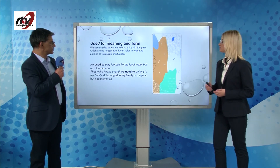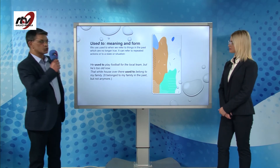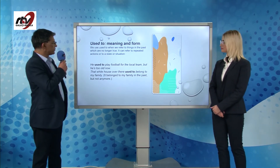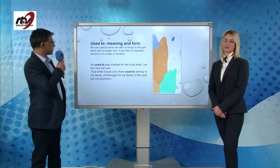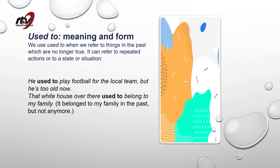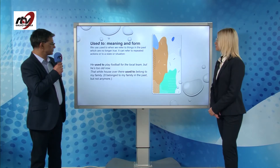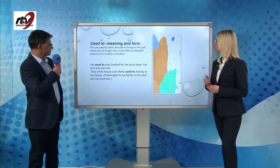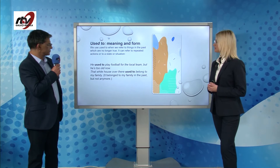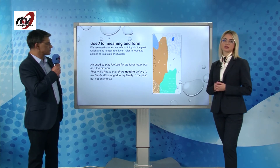Let's start with the meaning and form. We use 'used to' when we refer to things in the past which are no longer true. It can refer to repeated actions or to a state or situation.